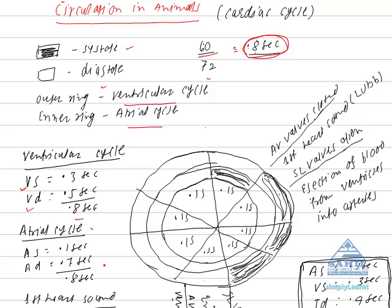Similarly, in the atrial cycle in the inner ring, we can see there is one shaded division which represents atrial systole of 0.1 second, followed by seven unshaded divisions which represent atrial diastole. So total duration of atrial cycle is also 0.8 seconds.